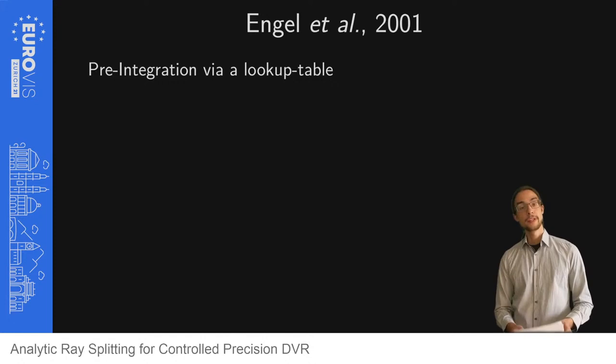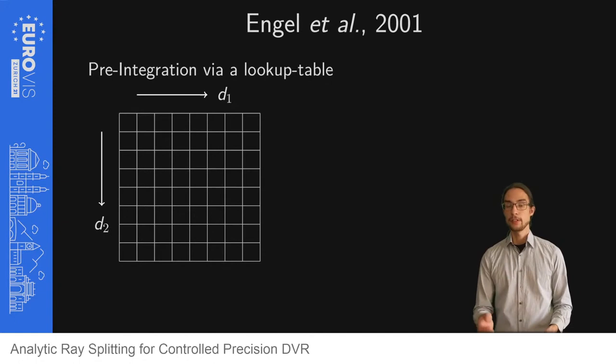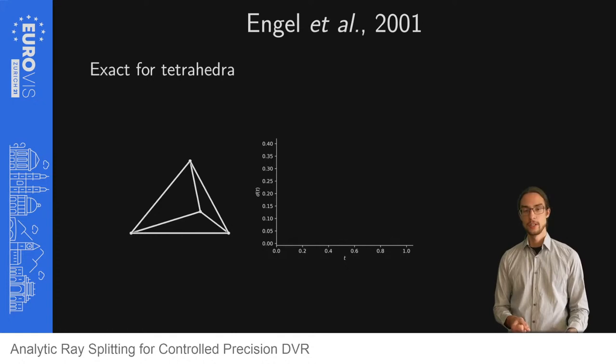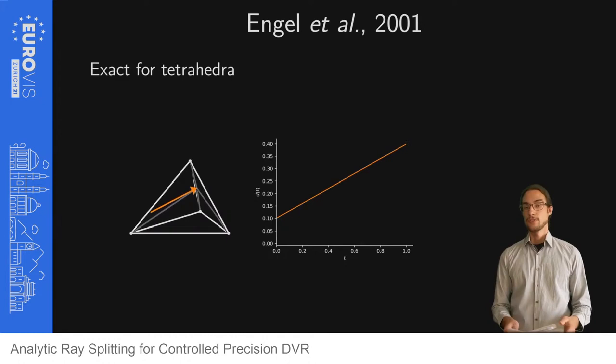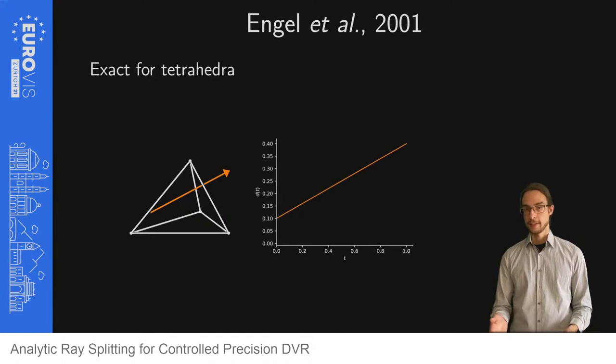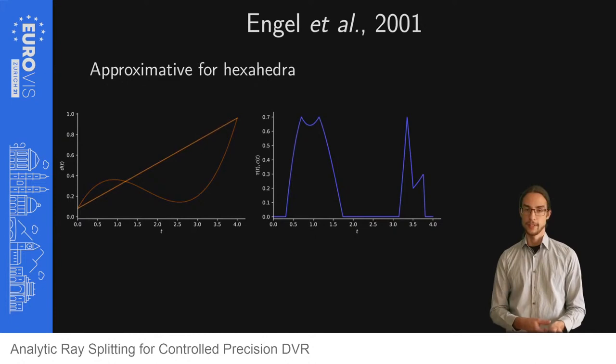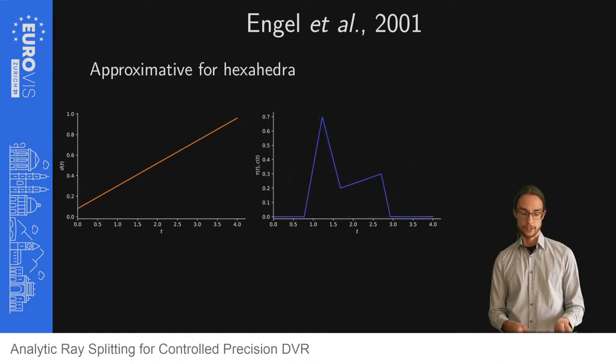Engler et al. proposed pre-integration in 2001. In pre-integration, a table of integrals for entry and exit densities is pre-computed, and this table is then queried when a ray passes through a voxel. Note that this method was originally introduced for tetrahedral meshes. In tetrahedra the ray gives rise to a linear function of the density, and pre-integration is exact in this case. On hexahedral meshes, however, with the cubic function of the density, pre-integration implies a linear realization of the density, changing the resulting color after applying the transfer function, and requiring a smaller step size to reduce approximation artifacts.